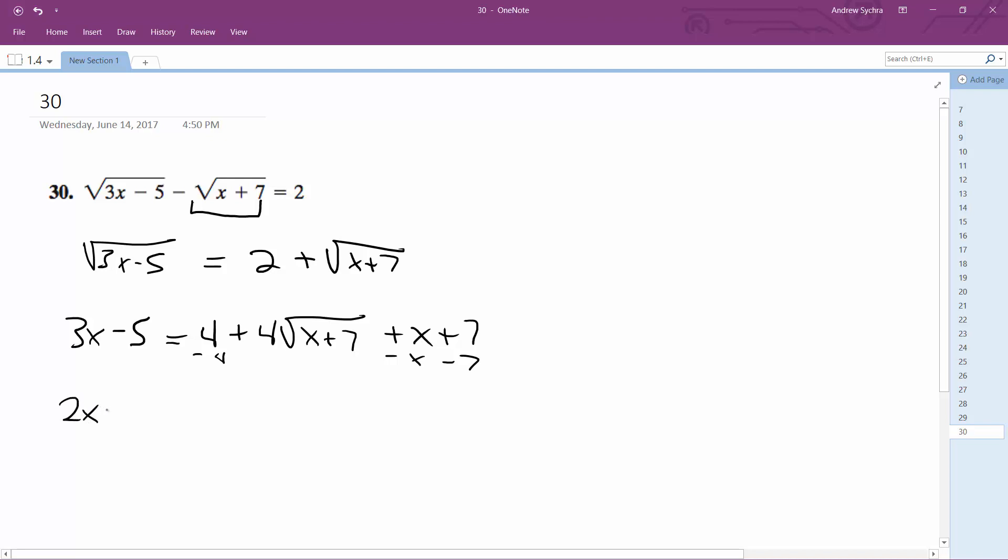So we get 2x minus 4, so that ends up being minus 16 is equal to 4 root x plus 7.